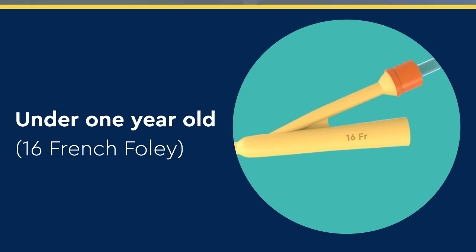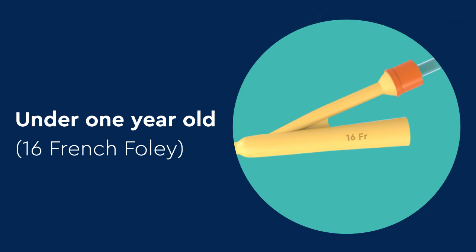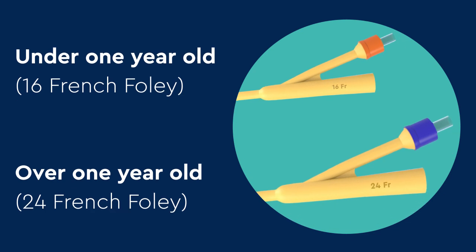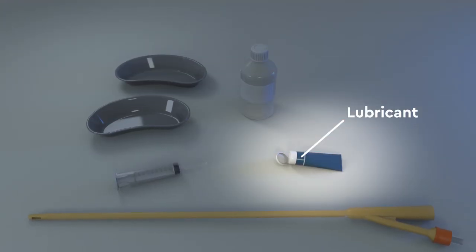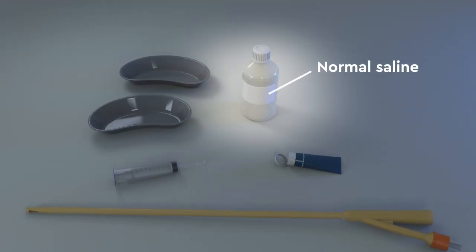If your child is under one year old, a size 16 French Foley catheter should be used. And if your child is over one year old, then you'll need to use a size 24 French Foley catheter. You'll also need water-soluble lubricant and normal saline.